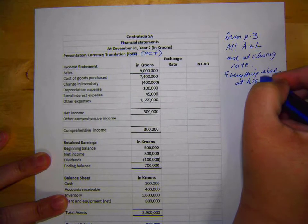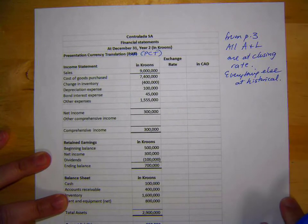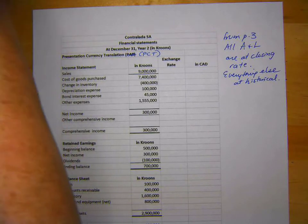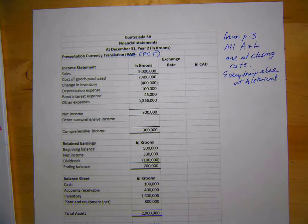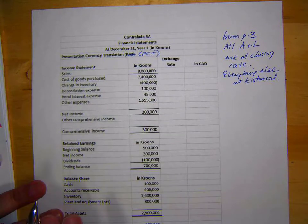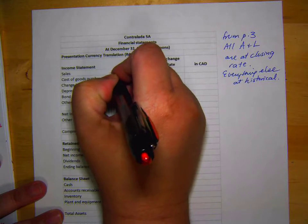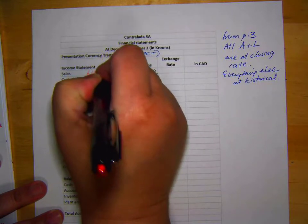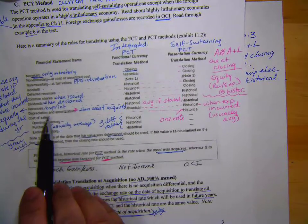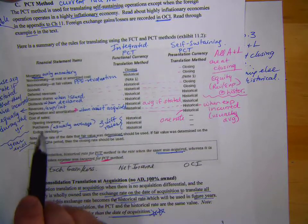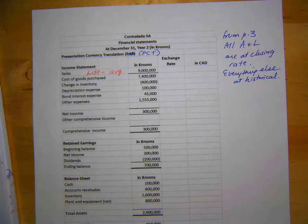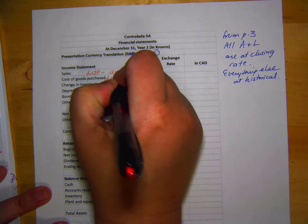Let's go through and figure out what rates apply. Everything on the income statement is going to be historical, but what does that mean? Sales — historical means average. Cost of goods purchased: looking on page three, cost of sales — opening inventory, purchases, ending inventory — all at one rate, and it's historical average, because together they make cost of goods sold.